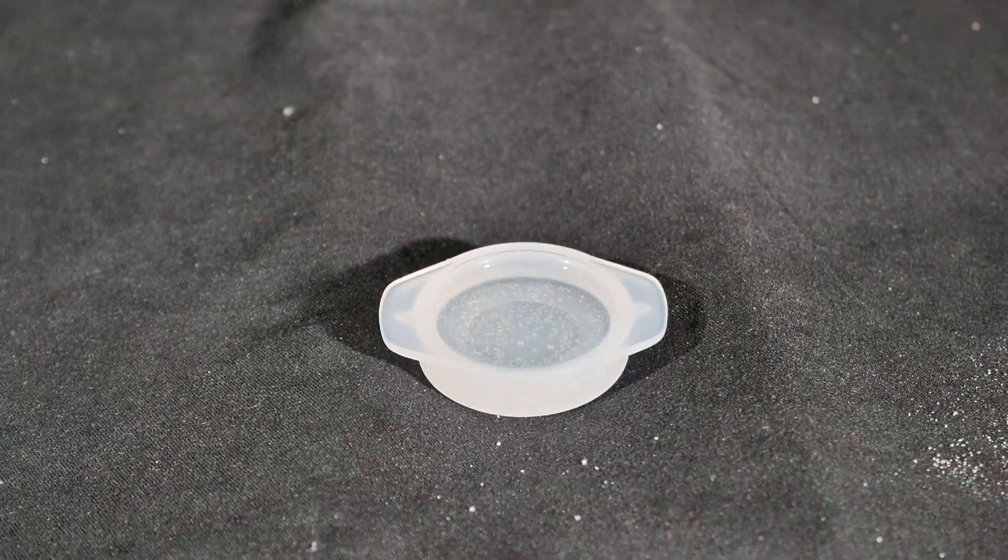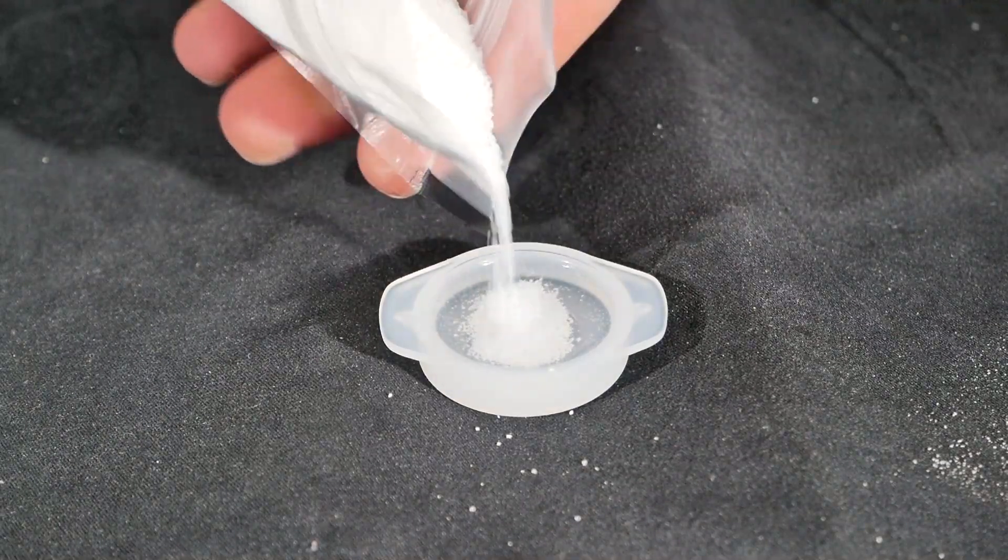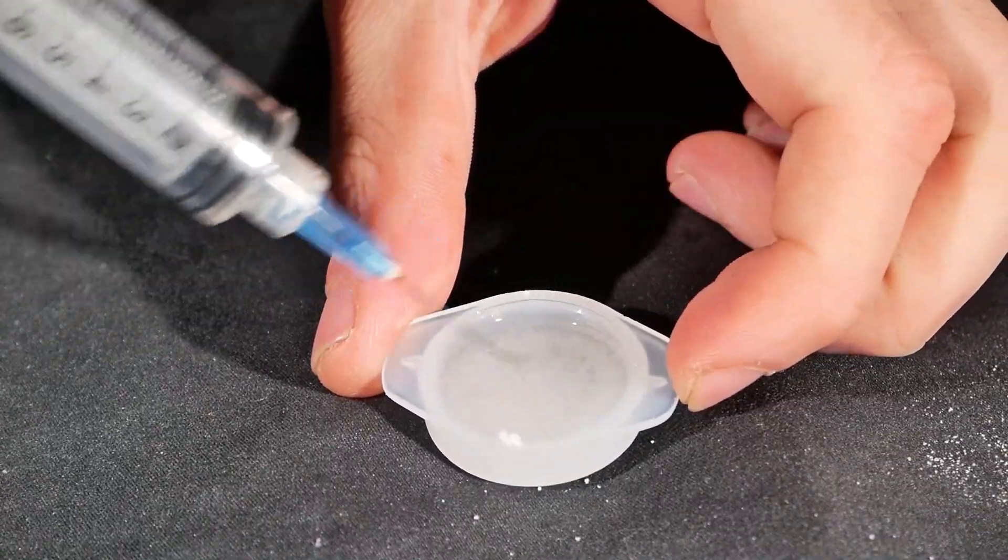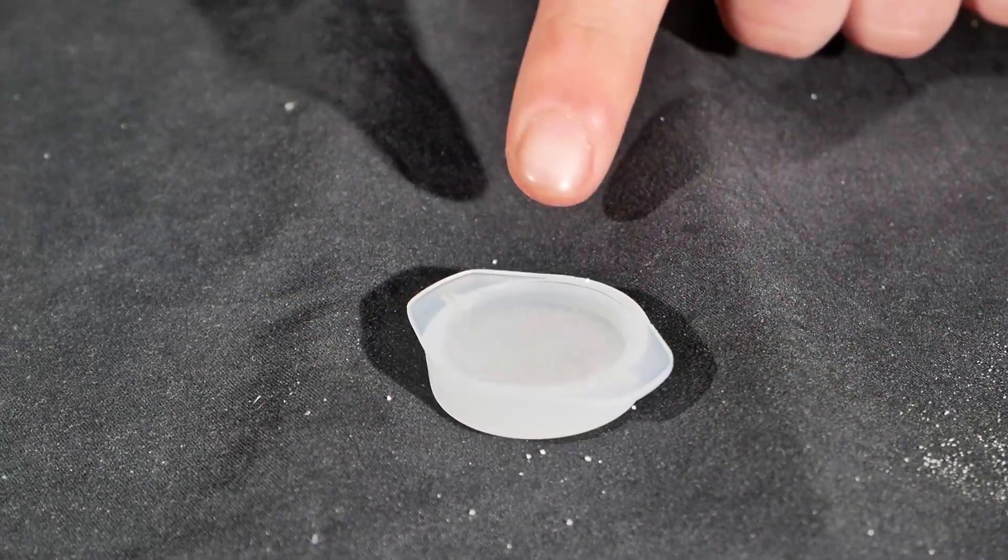And now we're going to add the little pellets. You really don't need to add that many. And I'm just going to move it around with the tip of the syringe needle. It's hard to see but they've expanded quite a bit.